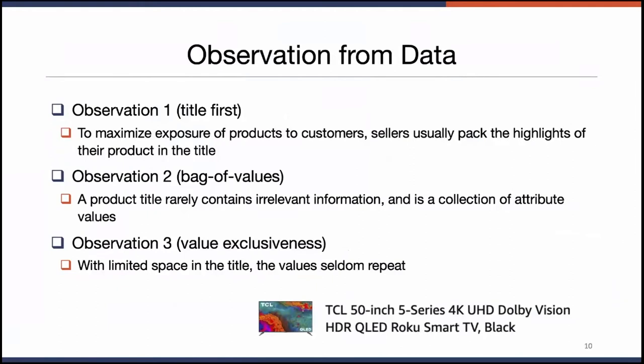Before jumping into our method, I want to highlight three observations from the data. The first is title first: the most important attributes of a product will be in the product title, because sellers want to maximize exposure. The second is bag of values: product titles are usually just a collection of attribute values, not spoken language. The third is value exclusiveness: attribute values in a product title usually don't repeat themselves.